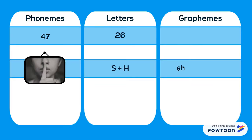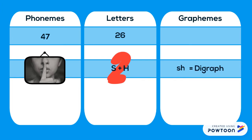Here's the grapheme that commonly represents sh. It has two letters but only represents one phoneme. We call graphemes with two letters a digraph, and there are lots of those in English.